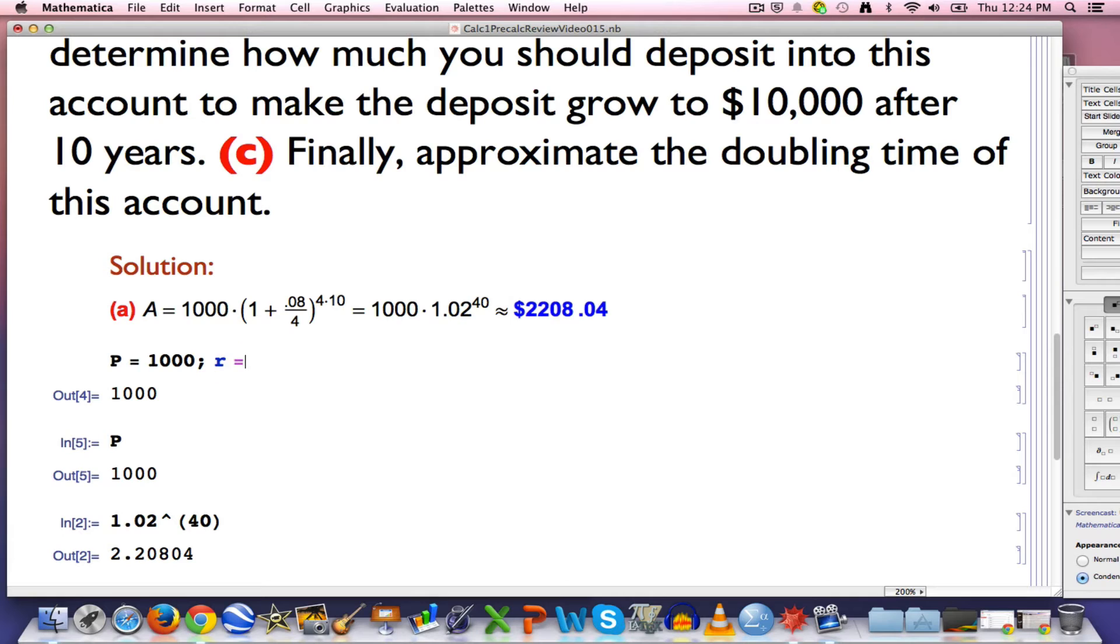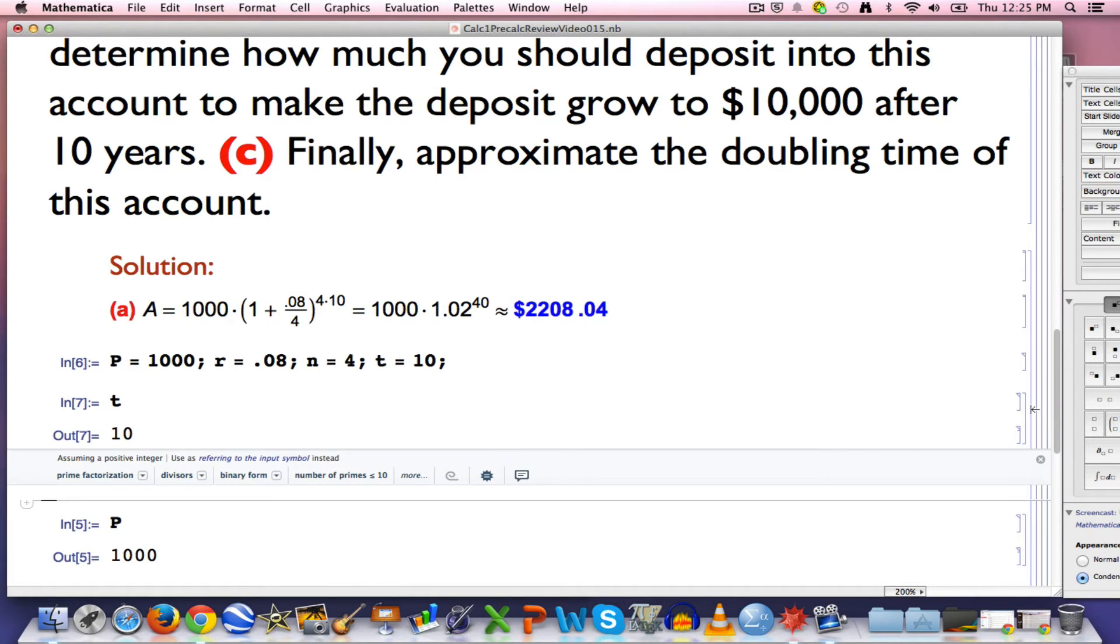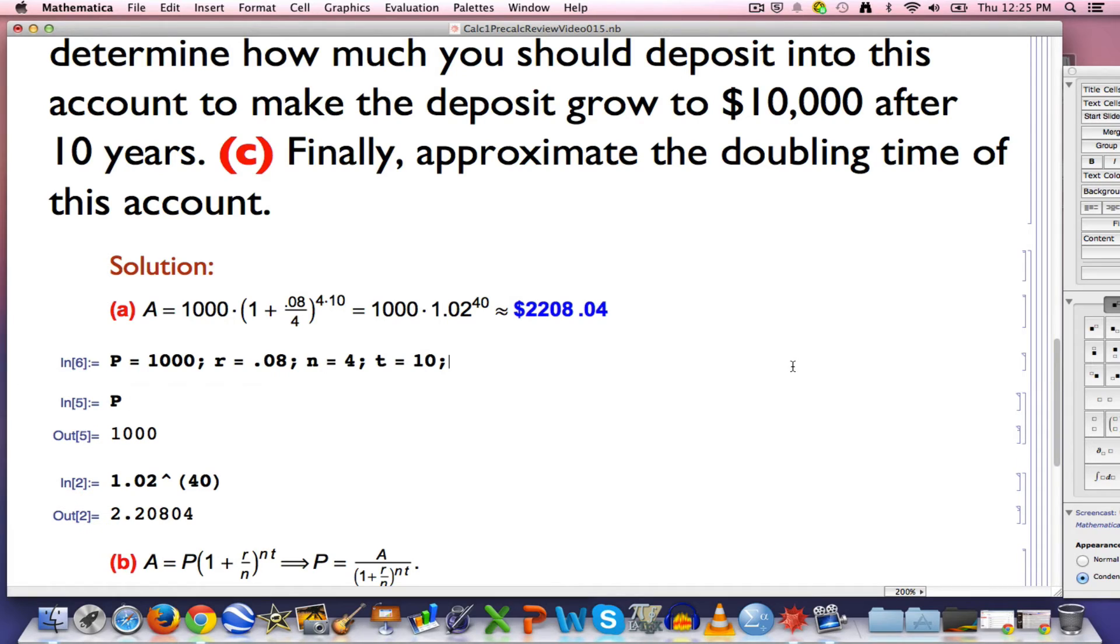P is the principal. R equals 0.08 is the interest rate. N is 4. T is 10. I can type all that out. The semicolons, by the way, just suppress output. I don't have to have them if I put these things on different lines but I like doing them. So all those values are now stored in Mathematica. T is 10, for example.